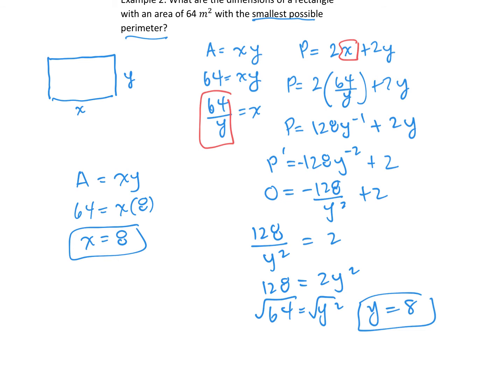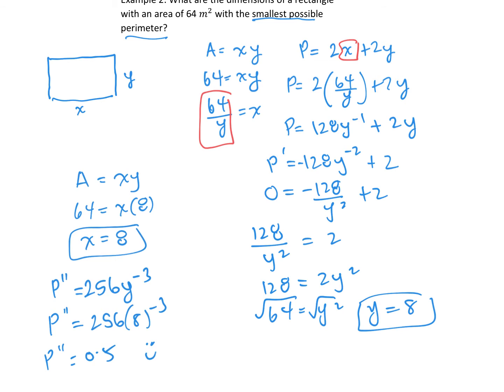To confirm it's a minimum, we find the second derivative P''(y) = 256y to the negative three. Substituting y equals 8 gives 0.5, which is a positive result, confirming that it is a minimum value.